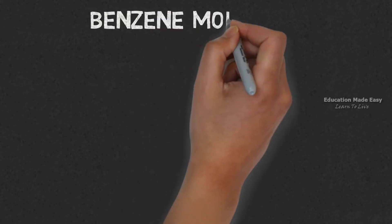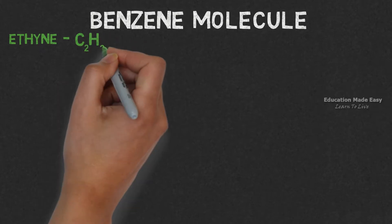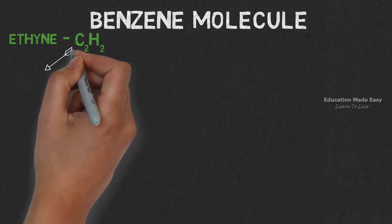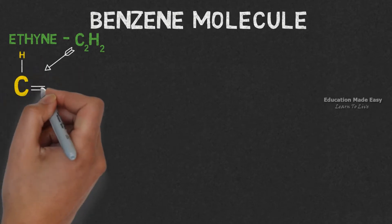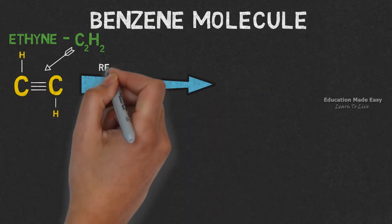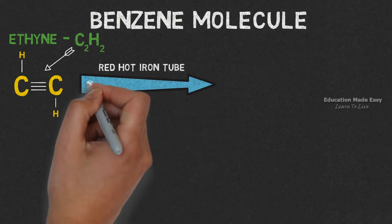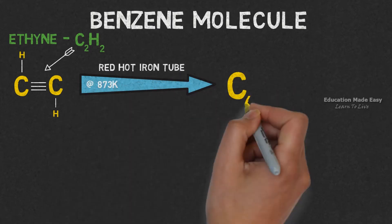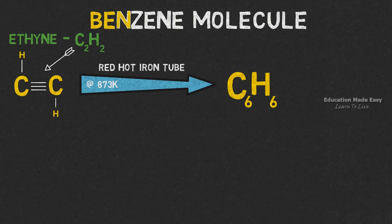Let us first learn how benzene molecule is made. Benzene can be made from ethane. The chemical formula of ethane is C2H2. In the C2H2 molecule, there is a triple bond between two carbon atoms. The ethane when passed through red hot iron tube at 873K, we get C6H6, which is benzene.